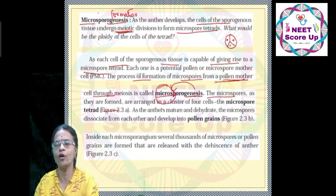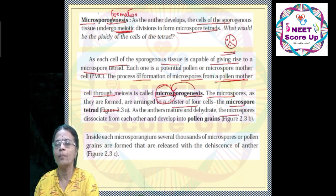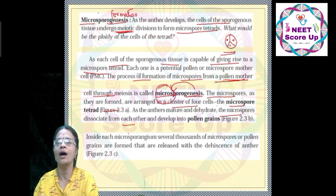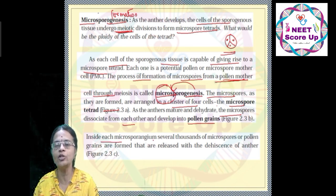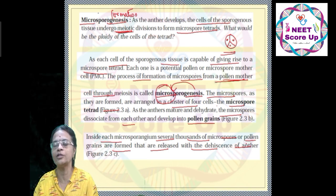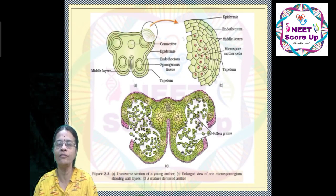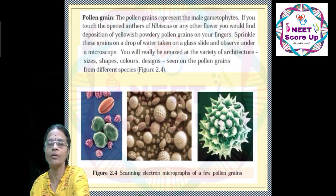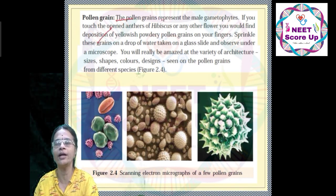The microspores are formed in a cluster of four cells, that is the microspore tetrad. Once in the young stage, the microspore tetrad matures and dehydrates; the microspores dissociate from the tetrad form and develop into pollen grains. Inside each microsporangium, several thousands of microspores or pollen grains are formed, and they are released with the dehiscence of the anther.